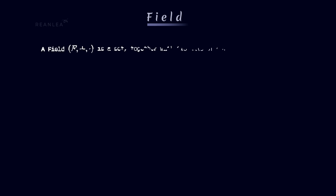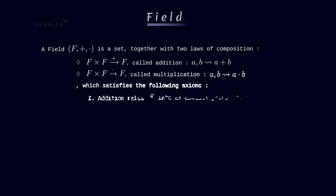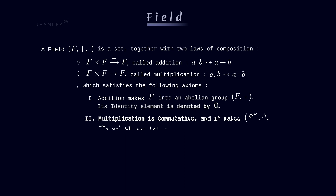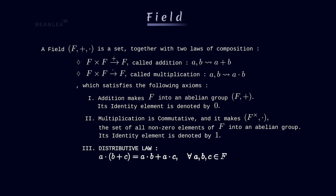A field is a set together with two laws of composition called addition and multiplication, which satisfy the following axioms: addition makes the set into an abelian group, and its identity element is denoted by zero; multiplication is commutative and makes the set of non-zero elements into an abelian group, and its identity element is denoted by one.